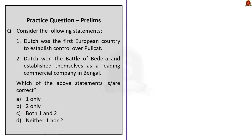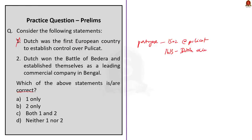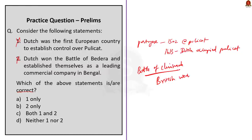Third question: which of the following statements about Dutch history is correct? Statement one: Dutch was the first European country to establish control over Pulicat — incorrect; Portuguese was the first European country to establish control over Pulicat, controlling it from 1502, but were overthrown by Dutch who built a fort there in 1613. Statement two: Dutch won the Battle of Bidara and established themselves as a leading commercial company in Bengal — incorrect; this battle, also called the Battle of Chinsura or Battle of Hooghly, took place in 1759 and was won by the British, not the Dutch. Dutch lost and ended commercial relations with India, concentrating on Dutch East Indies (Indonesia). Both statements are wrong, so the correct answer is option D: neither one nor two.